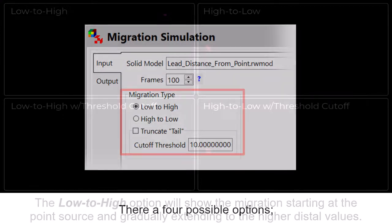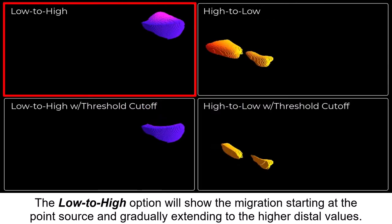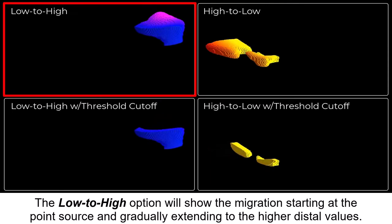There are four possible options. The Low-to-High option will show the migration starting at the point source and gradually extending to the higher distal values.